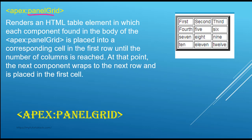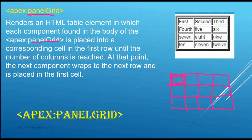What does this panel grid tag do? As you can see in this picture, it places every element in a cell. A cell is part of a table row. It renders an HTML table element in which each component in the body of the tag is placed into a corresponding cell in the first row until the number of columns is reached.